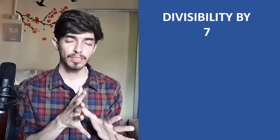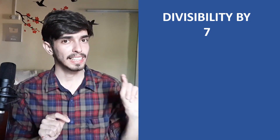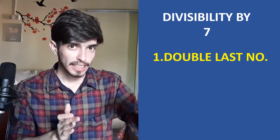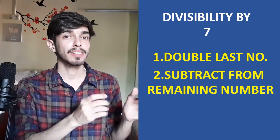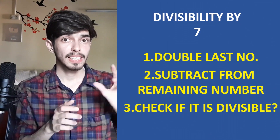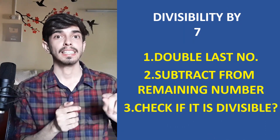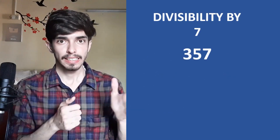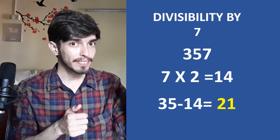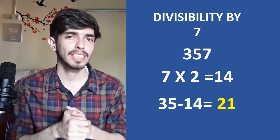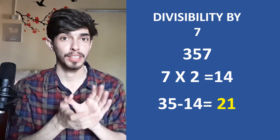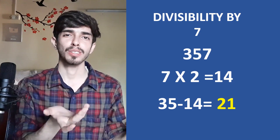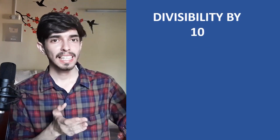The divisibility test by 7 is a little tricky: double the last digit and subtract it from the remaining digits. If the result is divisible by 7, then the original number is also divisible by 7. For example, 357: double the last digit gives 14; subtract from 35 gives 21; and 21 is divisible by 7, so 357 is also divisible by 7.